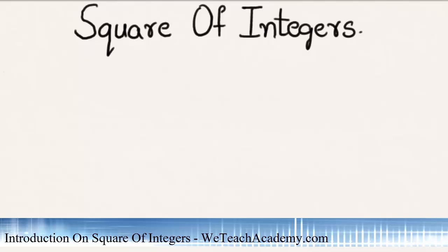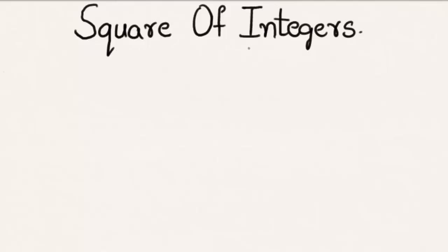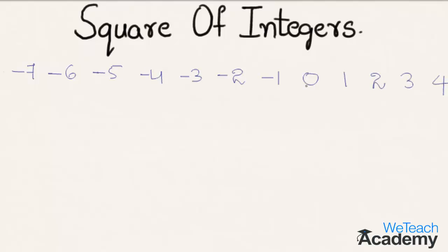Hey guys, welcome to WeTeachAcademy.com. In this presentation we are going to discuss square of integers. Let us consider a few integers like minus 7, minus 6, minus 5, minus 4, minus 3, minus 2, minus 1, then 0, 1, 2, 3, and 4. These are integer numbers.